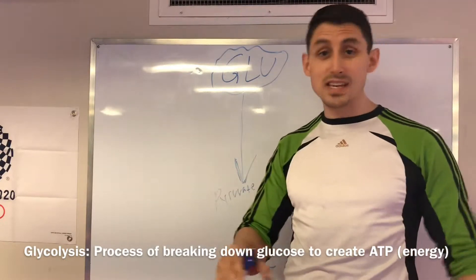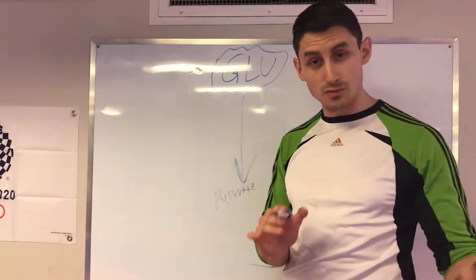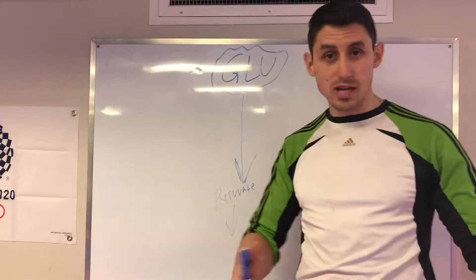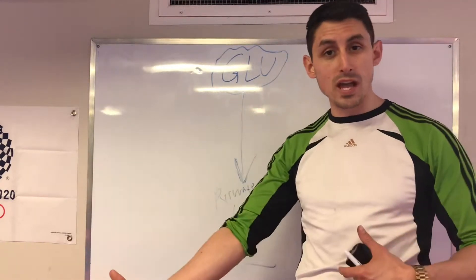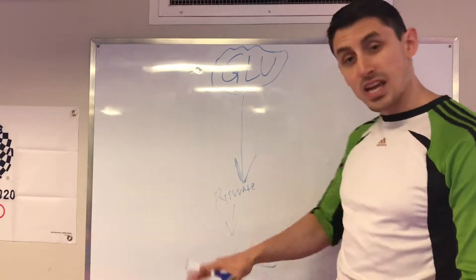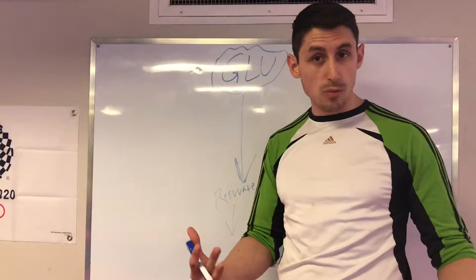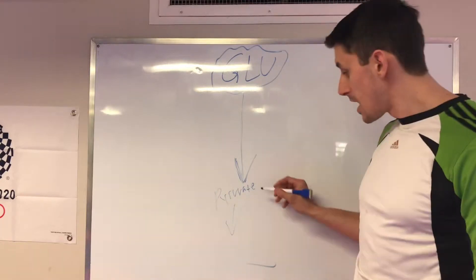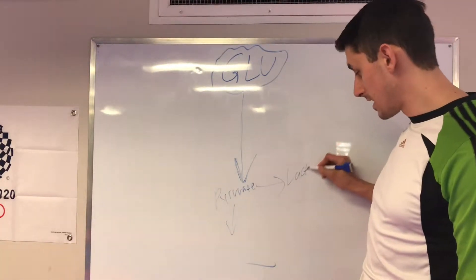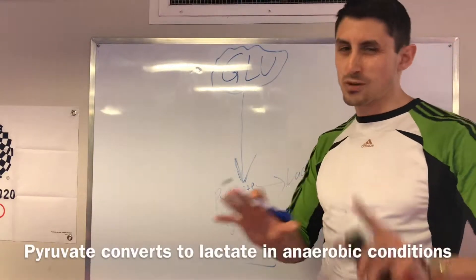Pyruvate is what glucose turns into after it goes through glycolysis, and this is important because pyruvate is actually where blood lactate or lactic acid comes from. Pyruvate can drop into the electron transport chain, the Krebs cycle, and it can undergo aerobic respiration. In non-oxygenated conditions like when we're doing anaerobic exercise, pyruvate can turn into lactate or lactic acid — they're a little different but for now think of them as the same.